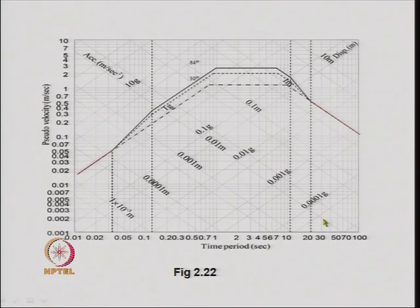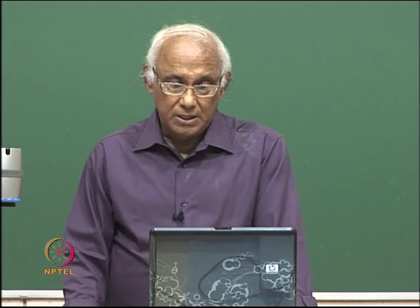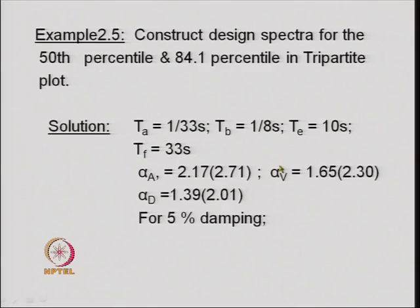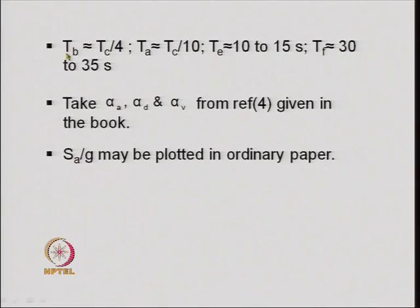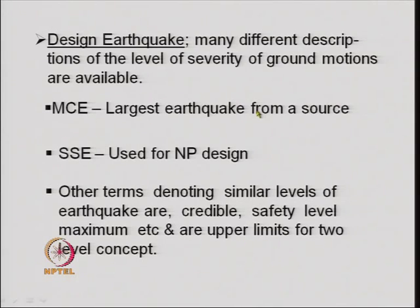Generally, the T_C value may be given, and from T_C one can obtain the other values T_A, T_B, etc. using approximate relationships. T_E and T_F generally lie in specified ranges. This is how one can obtain a design response spectrum using the idealized series of straight lines plotted in a tripartite plot.